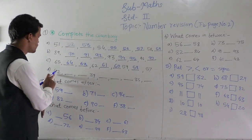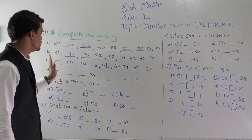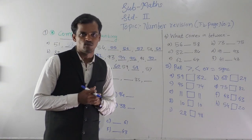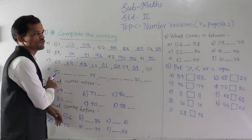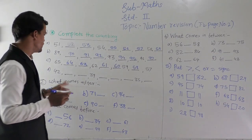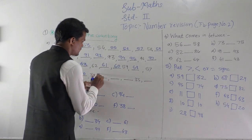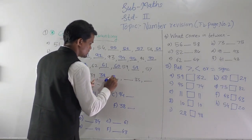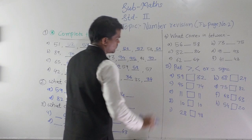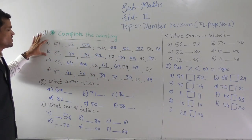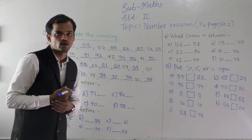Then here also: 42, 49, 35. The numbers are becoming less every time, so this is also backward counting. Every time you have to write the number that comes before the given number. See here: 42, 41, 40, 39, 38, 37, 36, 35 and 34. So the first two questions are forward counting and the next two questions are backward counting.